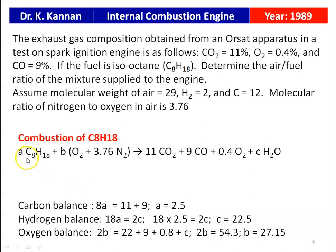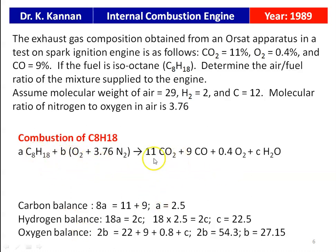The combustion equation for C8H18: A moles of C8H18 + B(O2 + 3.76 N2) → 11 CO2 + 9 CO + 0.4 O2 + CH2O. Carbon balance: 8A = 11 + 9 = 20, so A = 2.5. Hydrogen balance: 18A = 2C, so 18×2.5 = 45 = 2C, giving C = 22.5. Oxygen balance: 2B = 22 + 9 + 0.8 + 22.5 = 54.3, so B = 27.15.